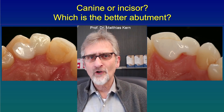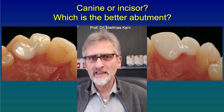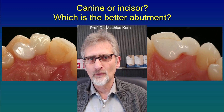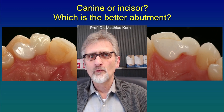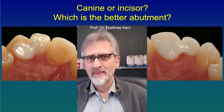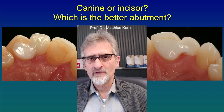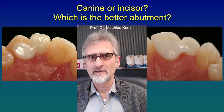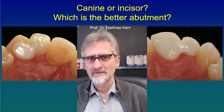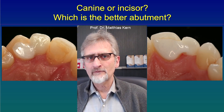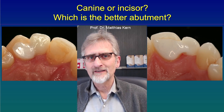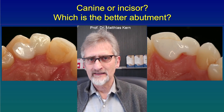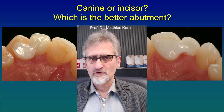That is in contrast to the canine. The canine is mostly loaded when the mandible moves to the lateral side, and then it is a completely different loading direction. So from the functional point of view it is better to use the central incisor as an abutment.